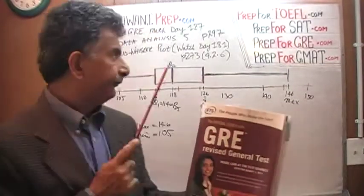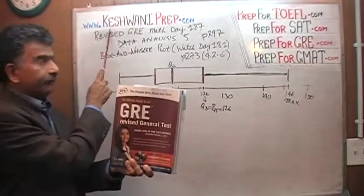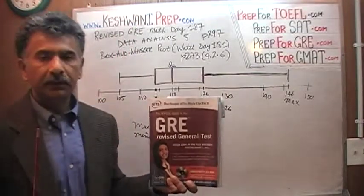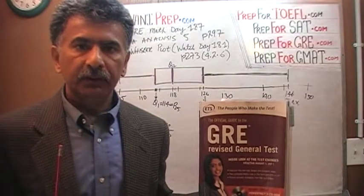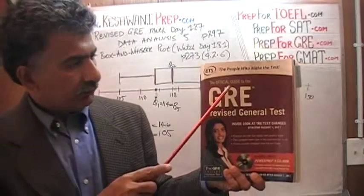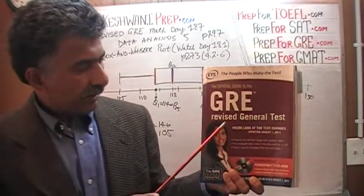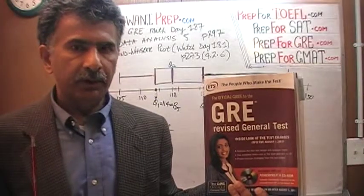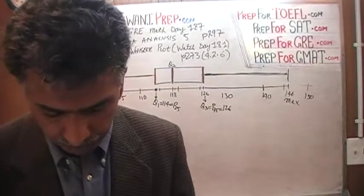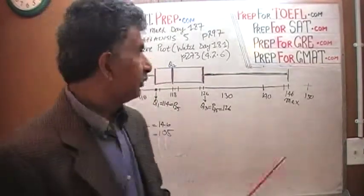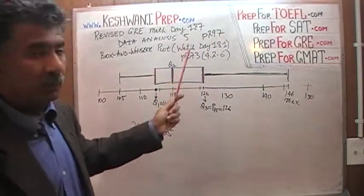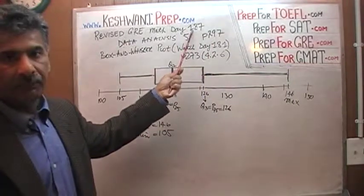Hello, my name is Keshwani — K-E-S-H-W-A-N-I — and we are here to prepare for the GRE. We have been solving GRE math problems out of this book, the Official Guide to the GRE Revised General Test. The problem we are about to solve is on the very top of page 297, problem number five, and today is our lesson number 187.